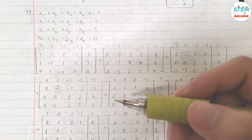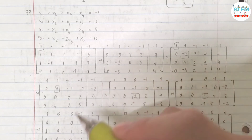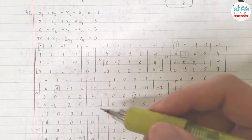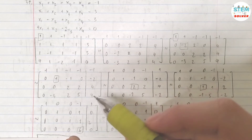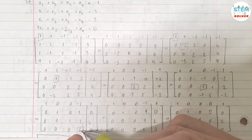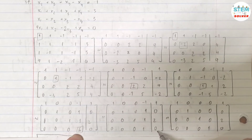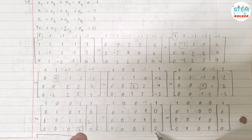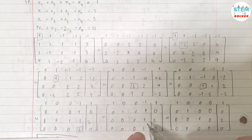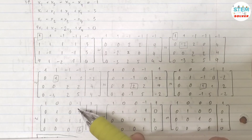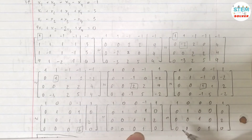Now let's make this the fourth pivot. Divide the fourth row by 6: you get 0, 0, 0, 1, 0 — since 0÷6=0, 6÷6=1, and 0÷6=0. Then rewrite the first, second, and third rows unchanged.